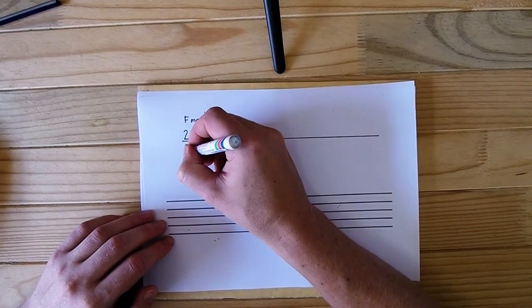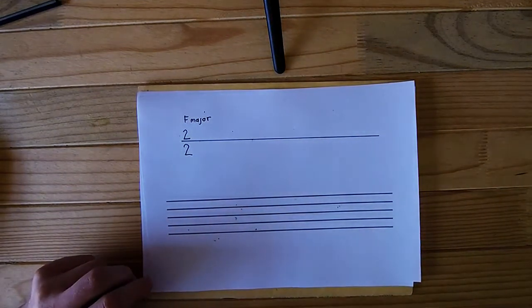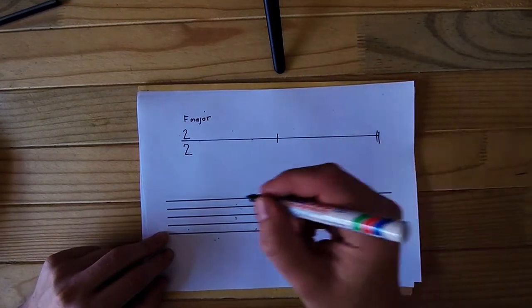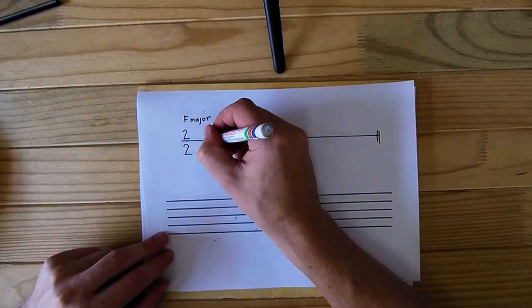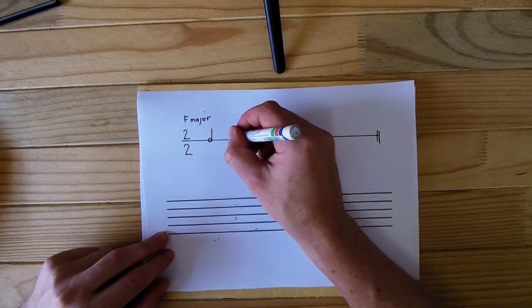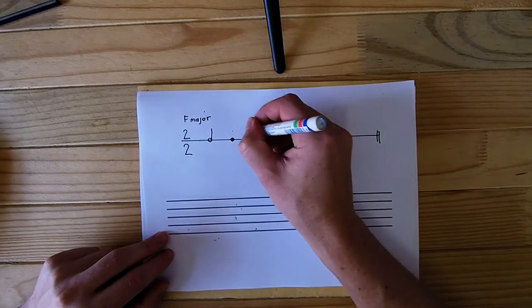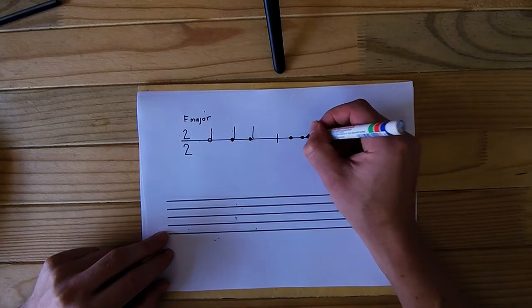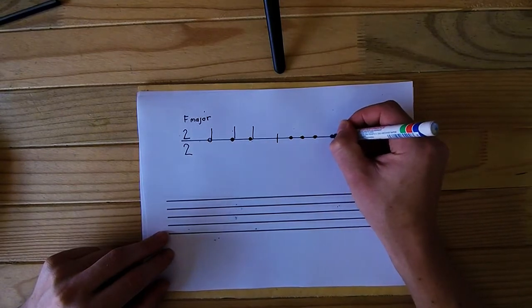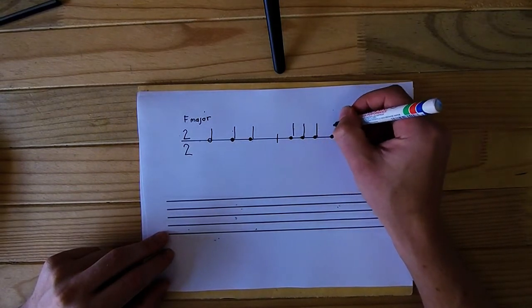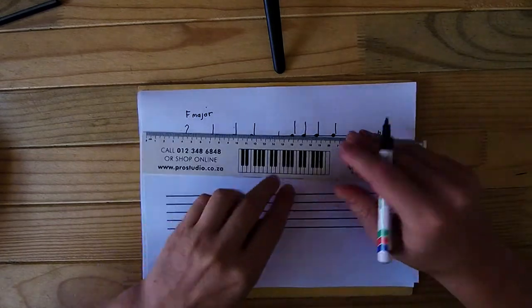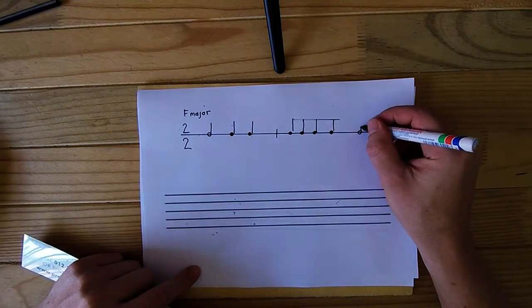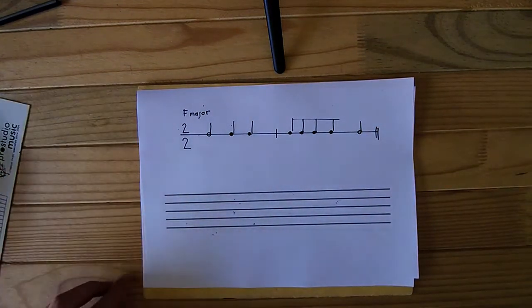And then they give you the time signature, which is two minims per bar. And then they give you the two bar rhythm to use. In this case, it is going to be minim, followed by two crotchets, followed by four quavers beamed together. And then they have a minim to end off the rhythm.